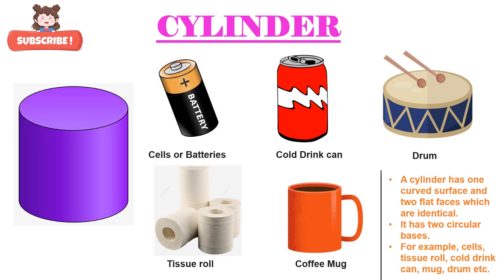The next shape that you can see on the screen is called cylinder. C-Y-L-I-N-D-E-R, cylinder. Now let's learn the properties of a cylinder. A cylinder has one curved surface and two flat faces which are identical — identical means they are the same. It has two circular bases.